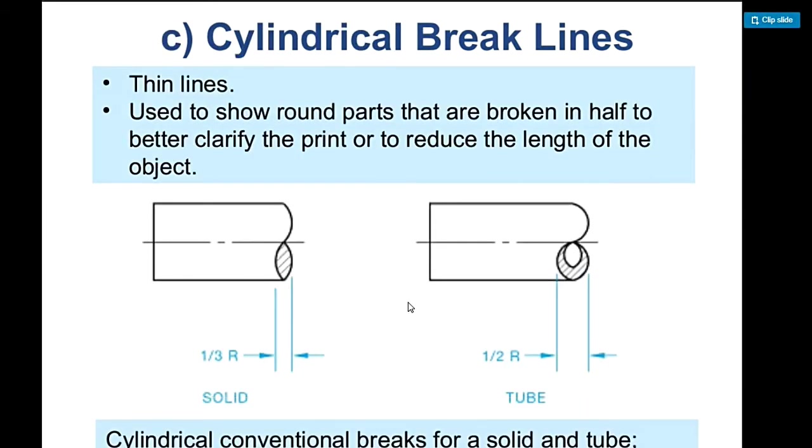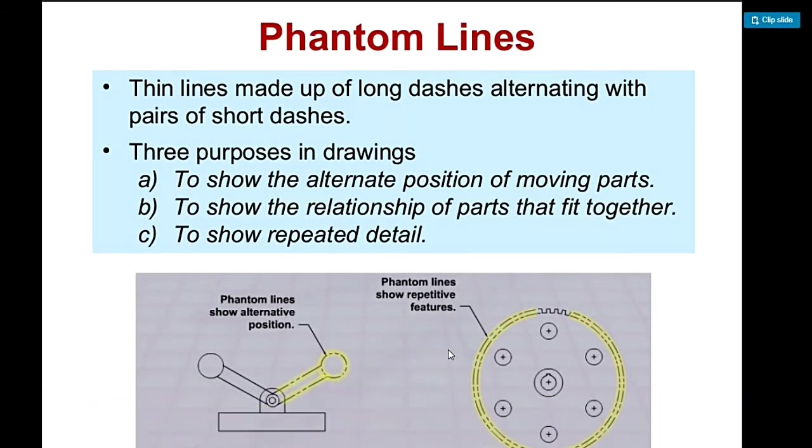For cylindrical break lines, it looks like the letter S. Same thing, it's used on cylinders like pipes and tubes. That's its appearance, like letter S, then it has section lines. That's the cylindrical break line.